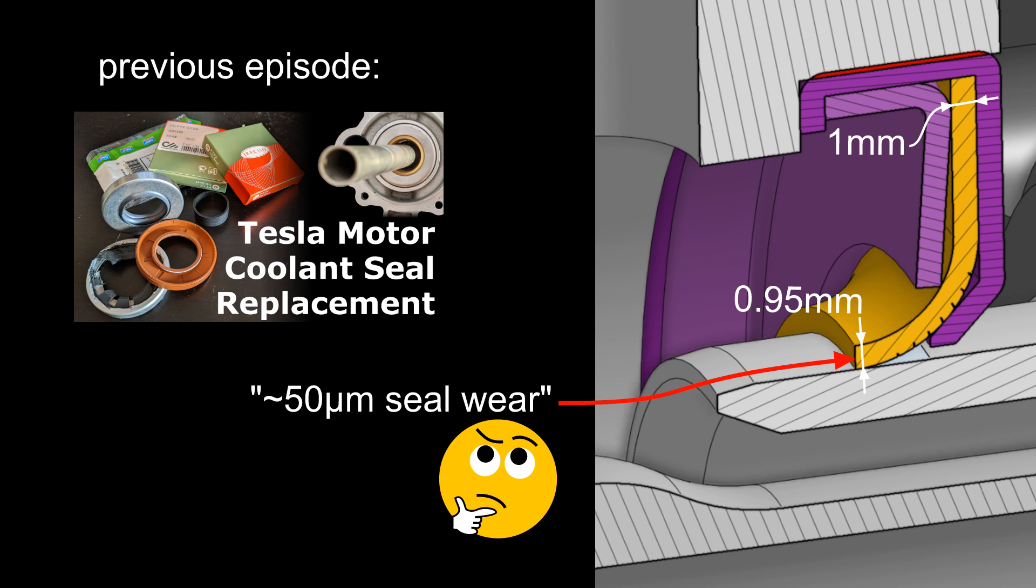In a previous episode I stated that the coolant seal failed simply because it was worn out, based on seal lip thickness measurements. This showed that the lip thickness at the contact area was roughly 50 micrometers lower than the rest of the lip.